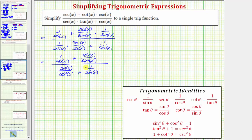This is called a complex fraction, because we have fractions within fractions. One way to simplify a complex fraction is to multiply the top and bottom by the least common denominator of all of the fractions.